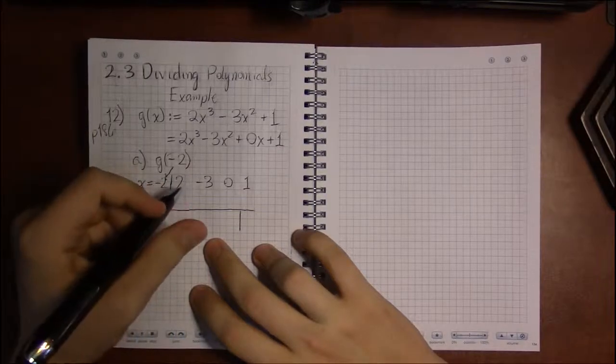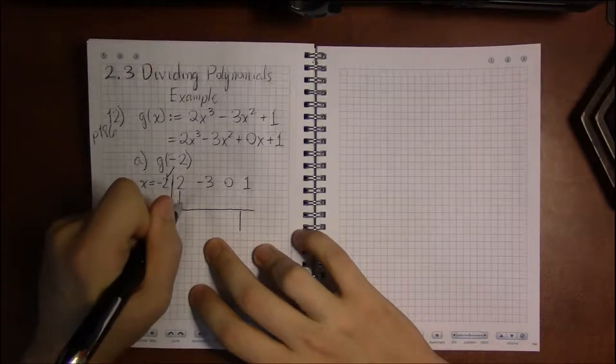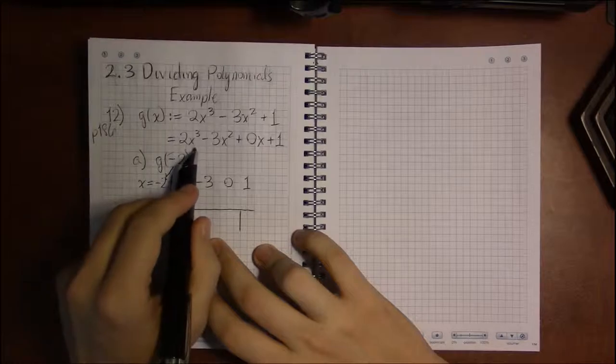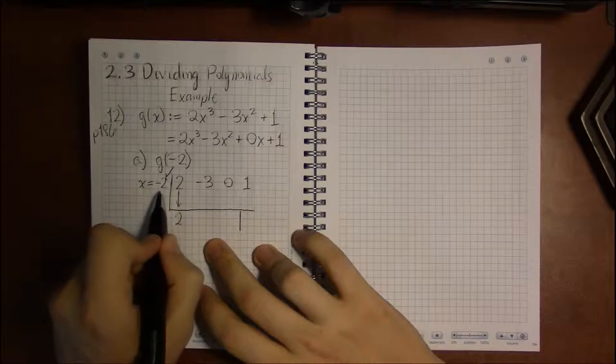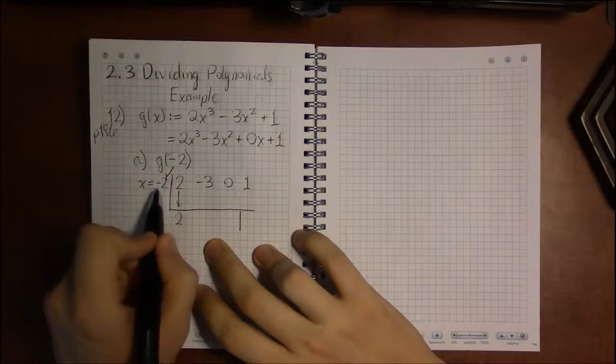So if we do this, the first step in synthetic division is to drop the 2. Drop the leading coefficient down, which in our case is 2, the coefficient of x cubed.